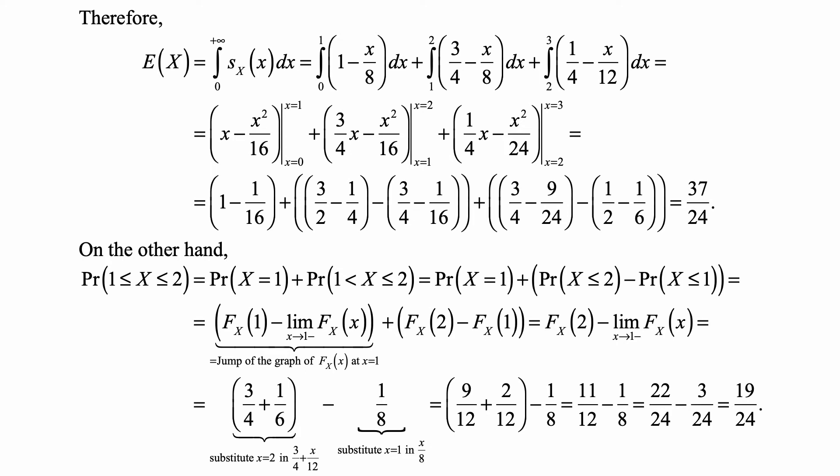On the other hand, the probability that X is between 1 and 2 inclusive at both ends is the probability that X is 1 plus the probability that X is more than 1 and less than or equal to 2. And that's the probability that X is less than or equal to 2 minus the probability that X is less than or equal to 1, which are both values of the cumulative distribution function which is given in the test.